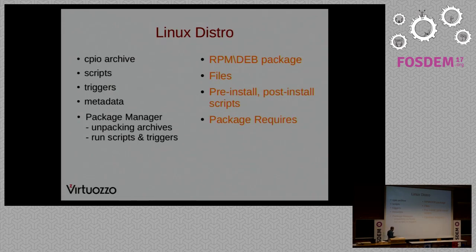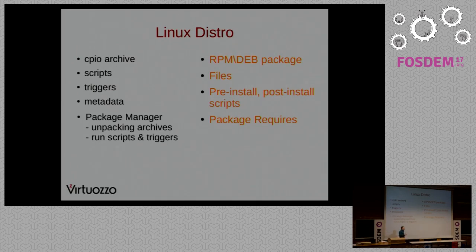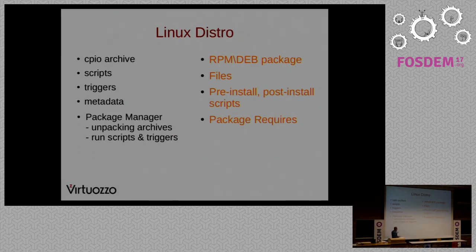What is container delivery? It's when you unpack specially prepared archives — usually known as DEBs or RPMs. For example, what is an RPM package? It is a CPIO archive that contains specially formatted metadata with build time, with scripts, with triggers. And the most important thing is dependencies — for example, package bash requires readline. The most difficult part here is to unpack the container in the right order.